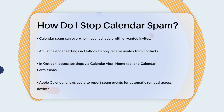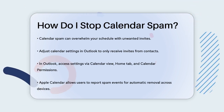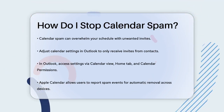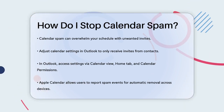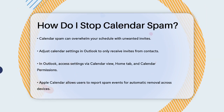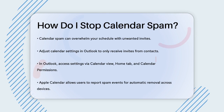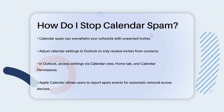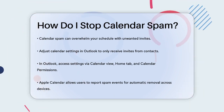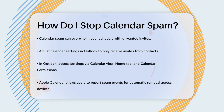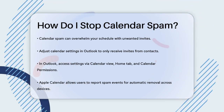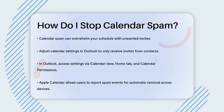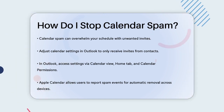First, let's talk about adjusting your calendar settings. If you're using Outlook, you can change your settings to only receive calendar invites from people in your contacts list. To do this, open Outlook, go to the Calendar view, navigate to the Home tab, and click on Calendar Permissions. Under Permissions, adjust the setting to only allow invites from your contacts. This can significantly reduce the amount of spam you receive.